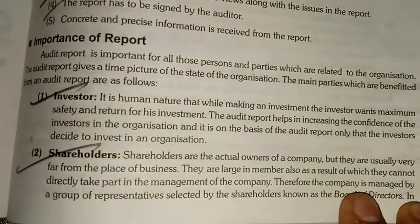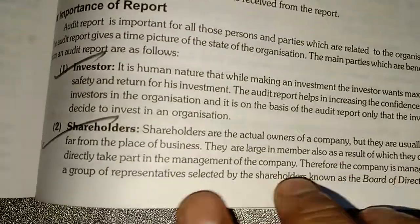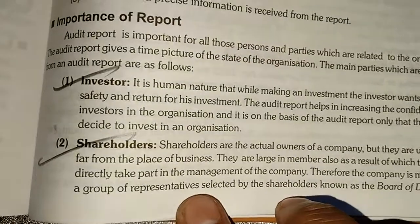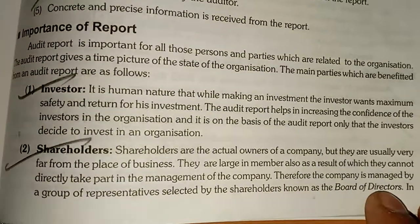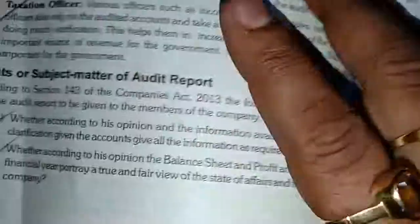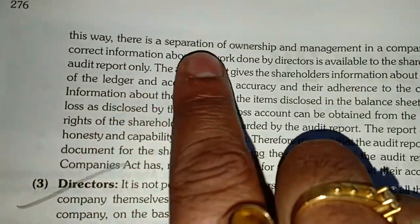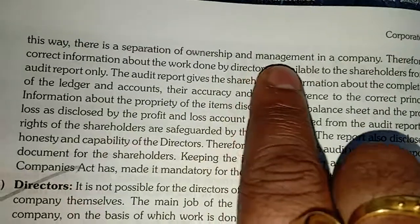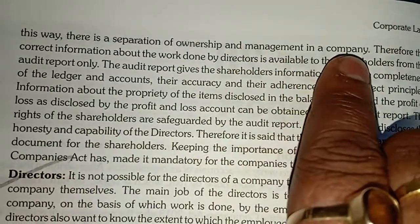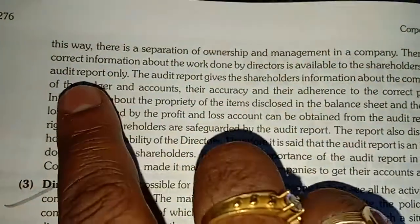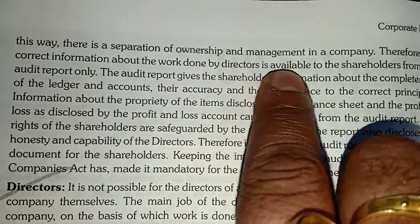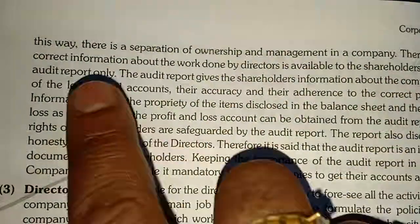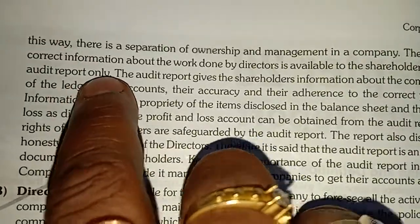Therefore, the company is managed by a group of representatives selected by the shareholders, known as the board of directors. In this way, there is a separation of ownership and management in a company. Therefore, the correct information about the work done by the directors is available to the shareholders from the audit report only.